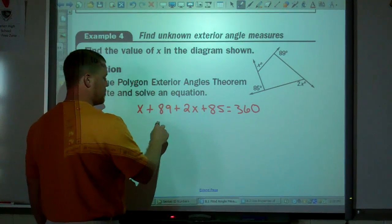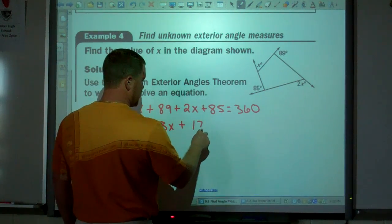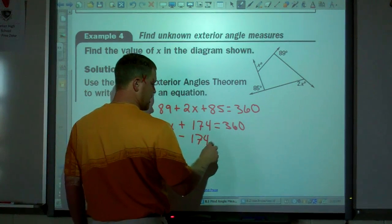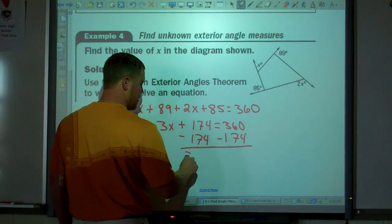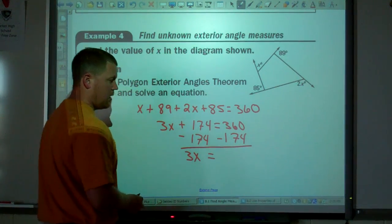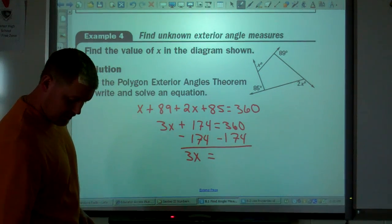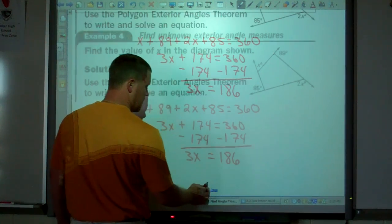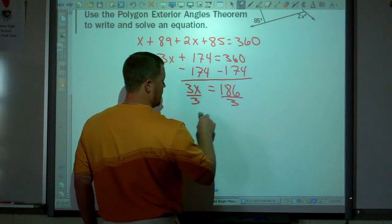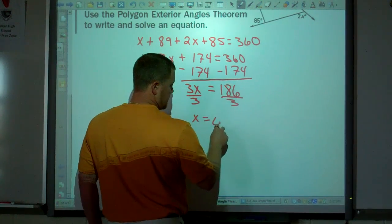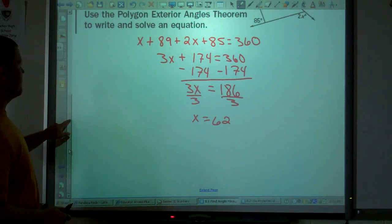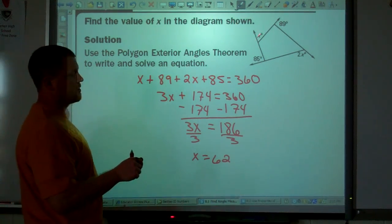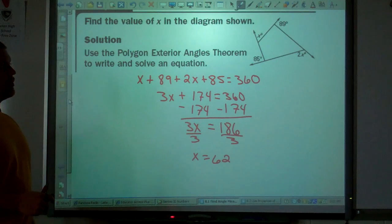Combine like terms. We get 3x plus 174 equals 360. Subtract 174 from both sides. 3x equals 186. Divide by 3. x equals 62. Find the value of x. x is 62. So I could find those angles. That's 62 and then that's 124.